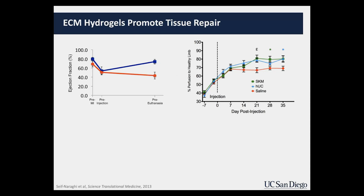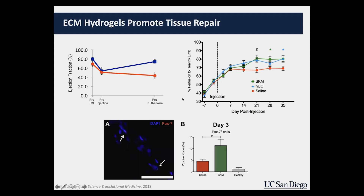In the peripheral artery disease model, shown here in green and blue, are two ECM hydrogels we tested. This graph shows increased perfusion — increased blood flow — compared to a saline control, suggesting these materials can create increased blood flow, which would help with peripheral artery disease.